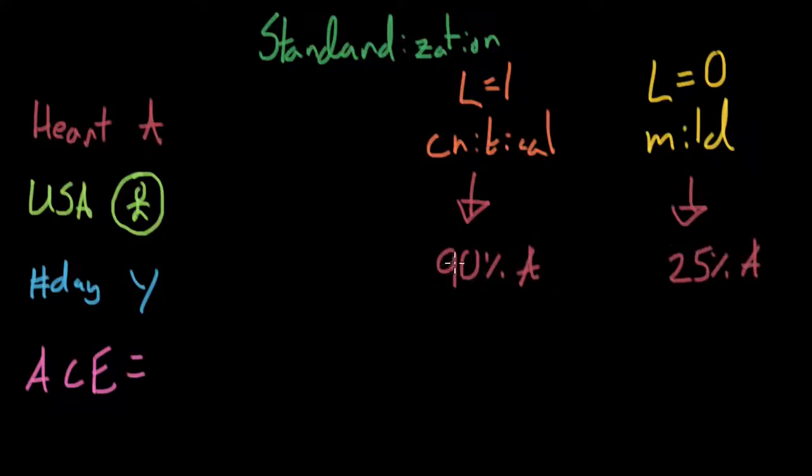And so we can pretty easily figure out what the average causal effect in the critical patients is because we have exchangeability amongst the critical patients. The average causal effect amongst the critical patients is Y sub A minus not A. You basically just take the association because association equals causation under exchangeability. So we can go ahead and find the average causal effect in the critical patients, and we can go ahead and find the average causal effect amongst the non-critical patients as well.